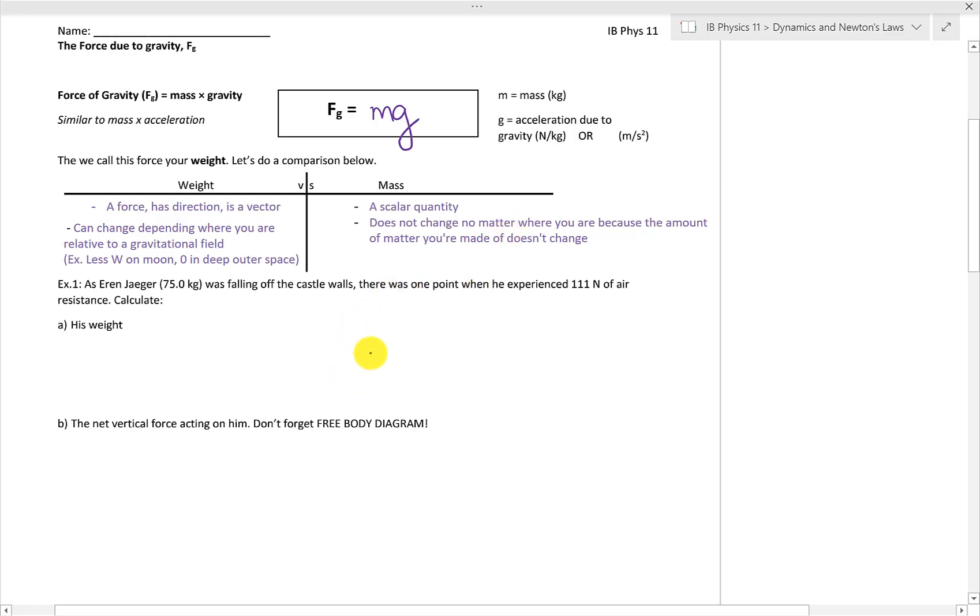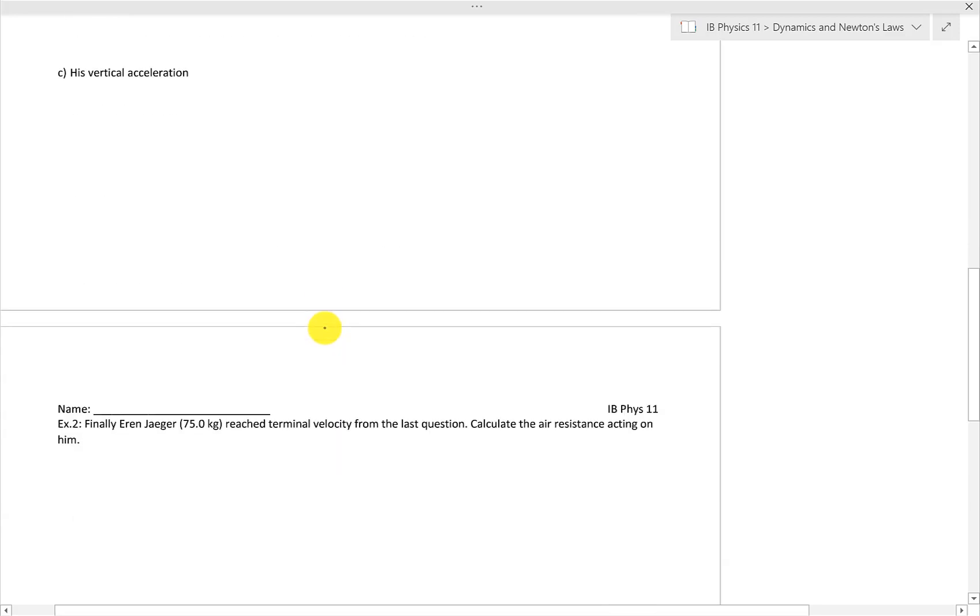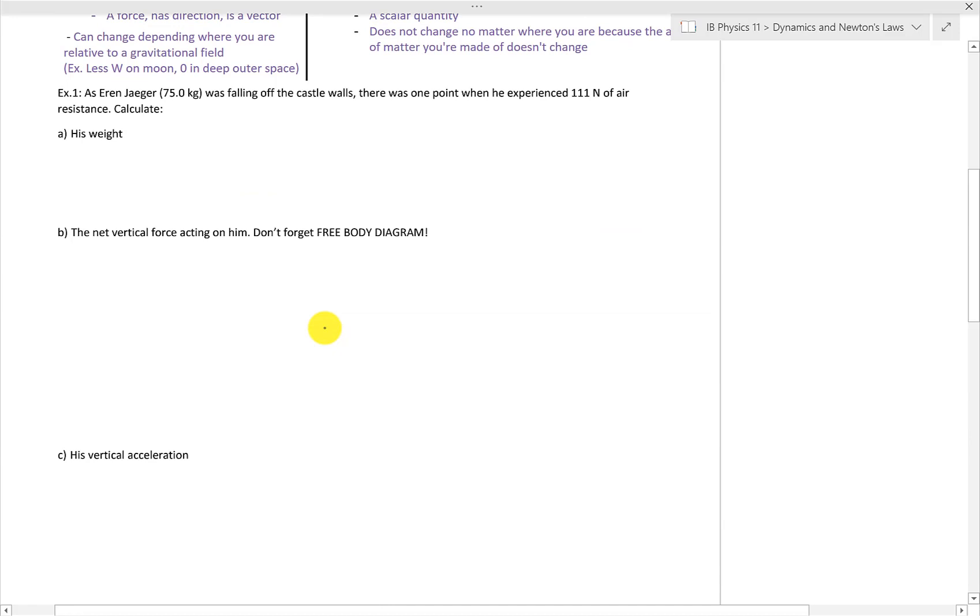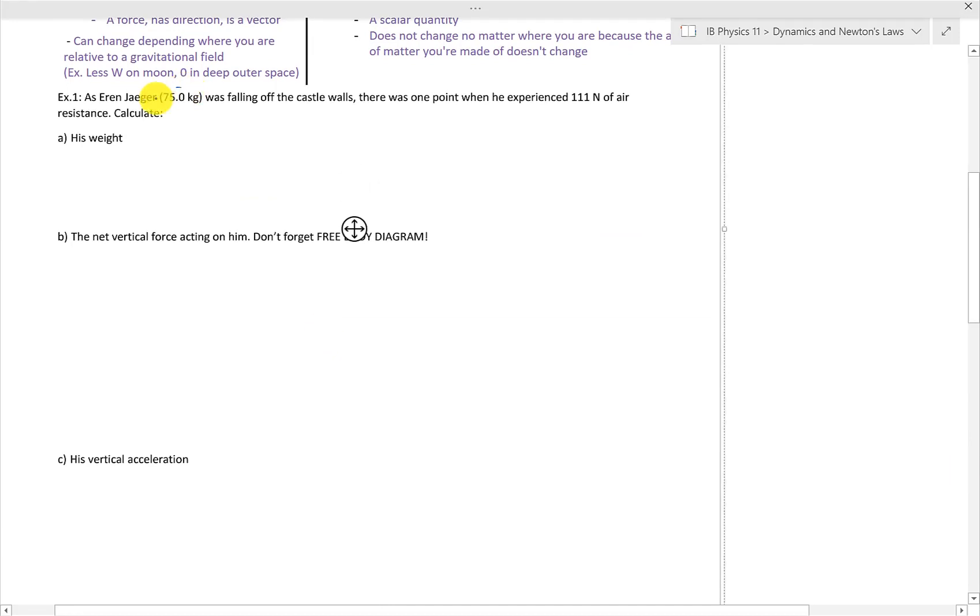I'm going to do question one, example A, B, and C. And question two, I'm going to give it as try yourself, which I will play in Fast Play for the solutions. Aaron Jaeger, here is his mass, was falling off the castle walls. There was one point when he experienced 111 Newtons of air resistance. I'm going to label that as F air.